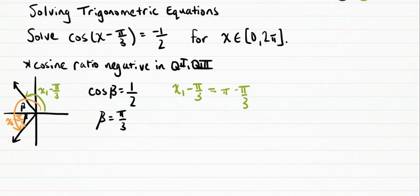To get our solution for x1, we solve this equation for x1. I add pi over 3 to both sides to get pi minus pi over 3 plus pi over 3, which means x1 equals pi.